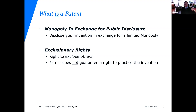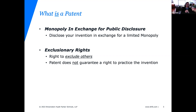A patent is a monopoly in exchange for public disclosure. Basically, if you come up with an invention, you get 20 years of exclusive rights to that invention. You can sue other people within that 20-year period and prevent them from doing what you created. In exchange, you are disclosing your invention to the public — it will be published — and after 20 years you give it to the public domain. It's an incentive to bring your technological advancements to the public in exchange for 20 years of exclusivity.